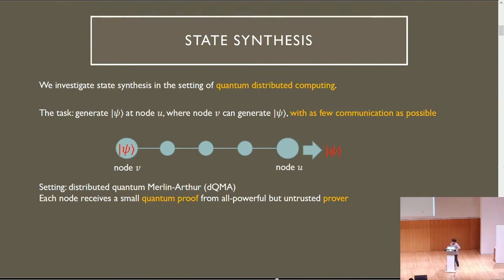More precisely, our setting is called distributed quantum Merlin-Arthur, or DQMA. In this setting, each node of the network receives a small quantum proof from an all-powerful but untrusted prover.